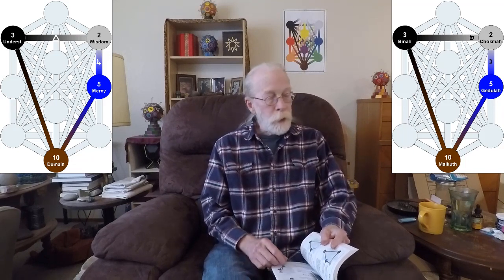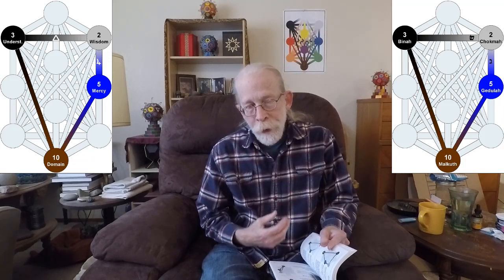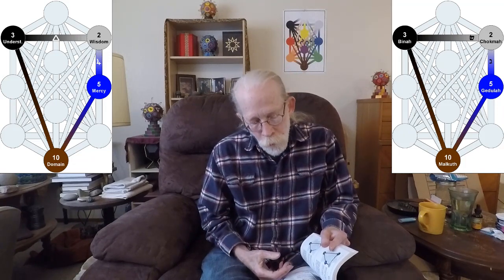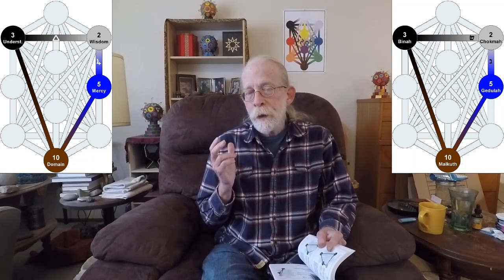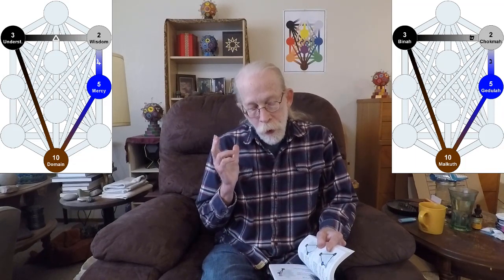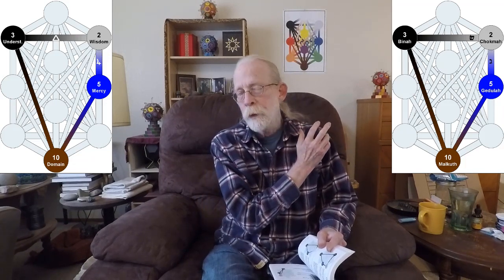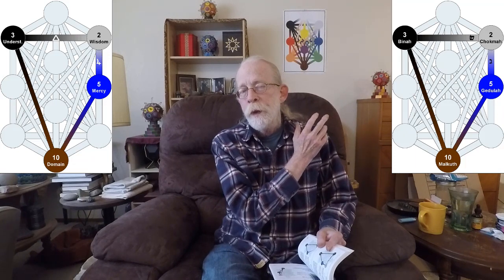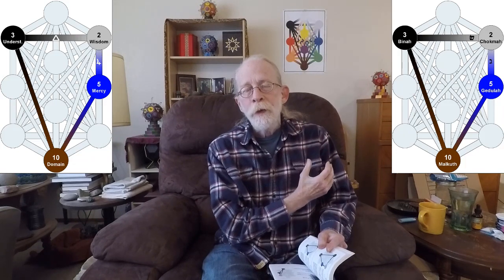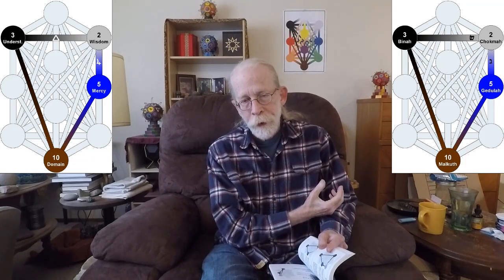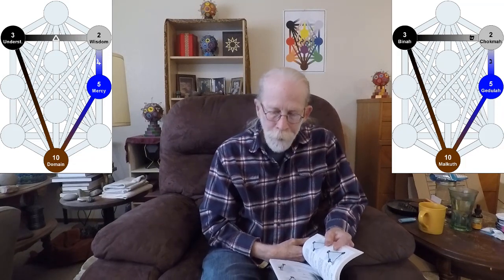So the first one is a quadrangle, and it goes from Gedjula down to Malkuth, from Malkuth up that hidden path all the way to Bina, Shin over to Chokmah, and then Gimel down to Gedjula, and then back around.